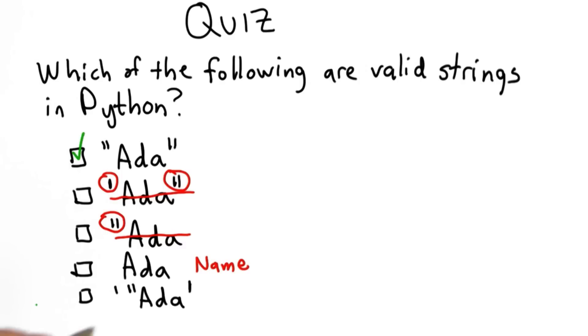The surprising one might be the last one. This is a valid string. It starts with a single quote, it ends with a single quote, and it's perfectly okay to have a double quote in the middle.